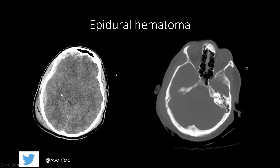An epidural hematoma — this is a non-contrast CT image of the head. All hemorrhage is going to be bright on a non-contrast CT examination. Here is the epidural hematoma: notice that it's along the convexity, along the periphery of the brain. It has a convex border, kind of like a lens-shaped border. It is highly associated with skull fracture, and they may show you an image in bone windows showing the break in the calvarium.